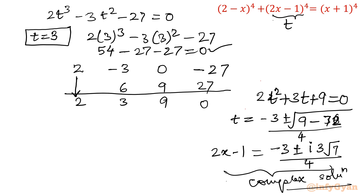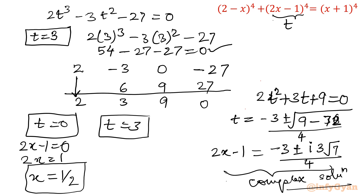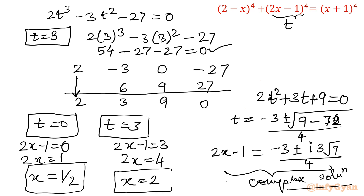Now coming to our real solutions: t equal to 0 and t equal to 3. From t equal to 0, we write 2x minus 1 equal to 0, so 2x equal to 1, giving x equal to 1/2 — this is our first real solution. From t equal to 3, we write 2x minus 1 equal to 3, so 2x equal to 4, giving x equal to 2 — this is our second real solution. The two complex solutions are rejected as we are finding real solutions only.